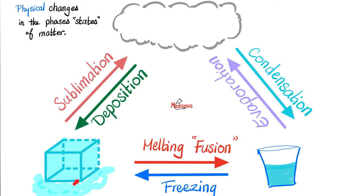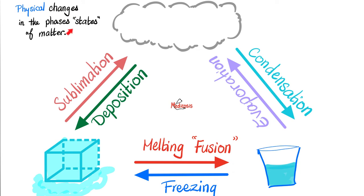From ice to water, it's called melting or fusion. From water to ice, it's called freezing. From water to vapor, it's evaporation. The opposite — from vapor to water — is called condensation. If we go from ice directly to vapor quickly without passing through the liquid state, this is called sublimation. The opposite is called deposition. These are called physical changes, different phases, or different states of matter.